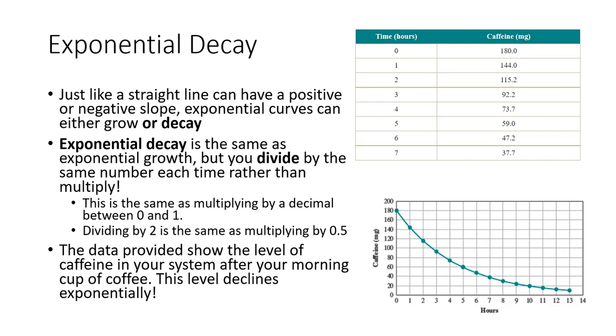Multiplication and division are the same thing. So dividing is essentially just multiplying by a decimal that's between 0 and 1, something less than 1. For example, dividing by 2 is the same thing as multiplying by 0.5. So here the data that we have shows the caffeine in your system after your morning coffee, based on the number of hours. And so let's practice a little bit with how exponential decay works.